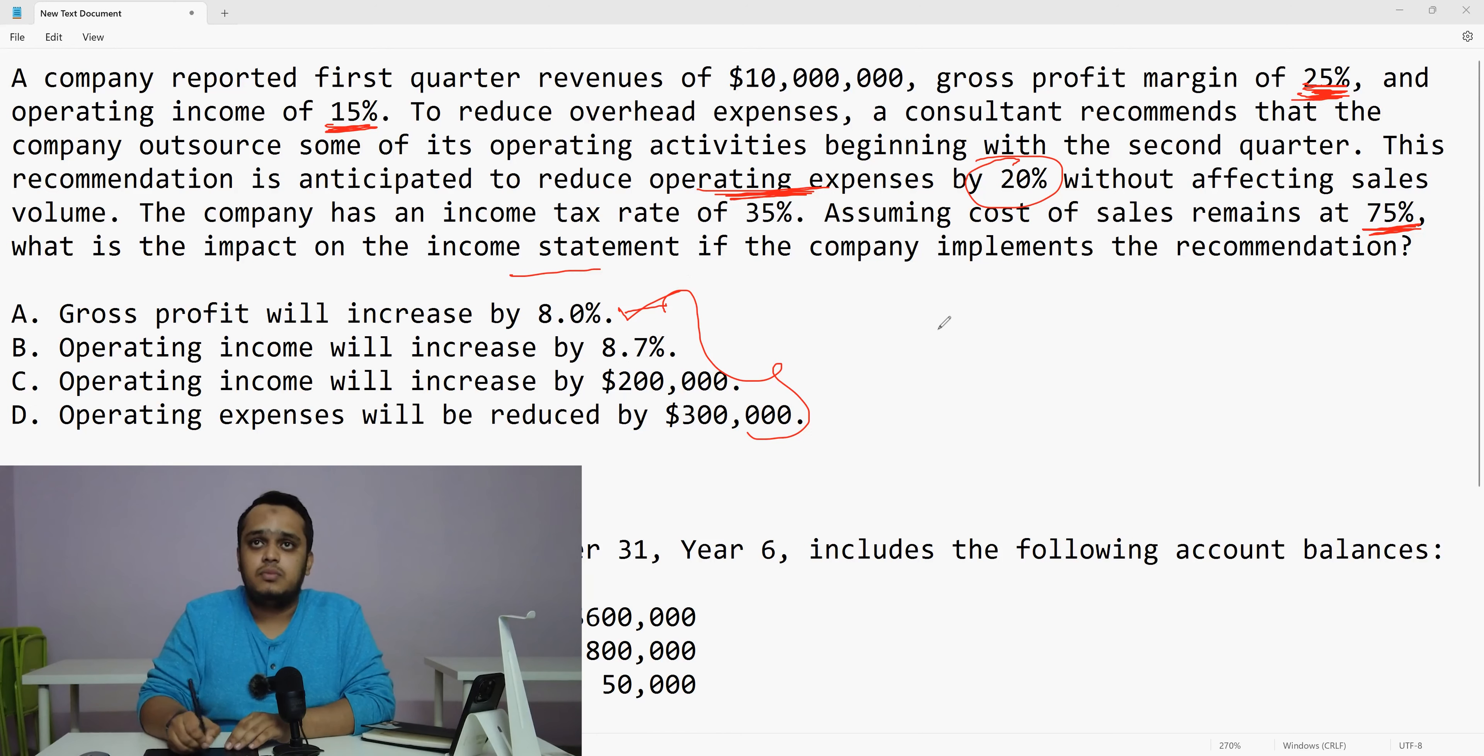So in this scenario, let me just do it here. Suppose my operating income is 15%, my gross profit margin is 25%. So it is understood here. 10 million is my sales. I hope everybody is following. If yes, then like this video, share it with the CMA student, comment down below. If you're watching this video, then 10 million is my sales minus my cost of sales, because my gross profit margin is 25%. It means 2.5 million is my gross profit. So my cost of sales is 7.5 million.